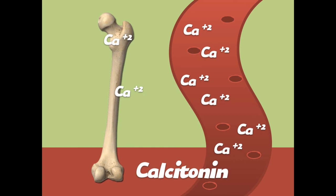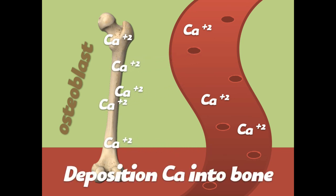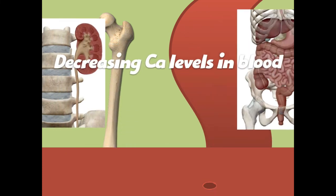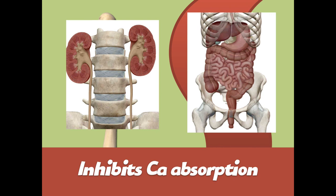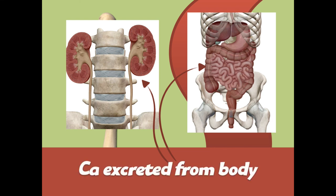Calcitonin keeps calcium 'in' the body. It stimulates osteoblasts, which take calcium from the bloodstream and redeposit it back into the bone — like depositing money in a bank for safekeeping. It also inhibits osteoclasts. In addition, calcitonin inhibits calcium absorption by the kidneys and intestinal system, allowing the kidneys to excrete excess calcium through urination or defecation.